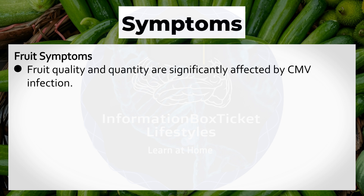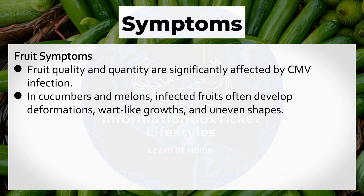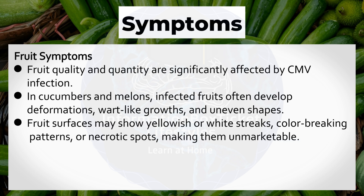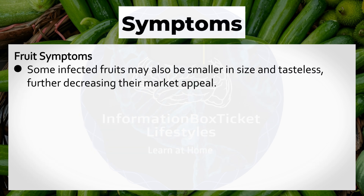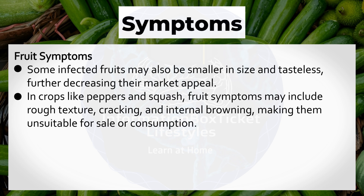Fruit Symptoms: Fruit quality and quantity are significantly affected by CMV infection. In cucumbers and melons, infected fruits often develop deformations, wart-like growths, and uneven shapes. Fruit surfaces may show yellowish or white streaks, color-breaking patterns, or necrotic spots, making them unmarketable. In tomatoes, CMV infection leads to uneven ripening, discoloration, and poor fruit set, reducing the crop's commercial value. Some infected fruits may also be smaller in size and tasteless. In crops like peppers and squash, fruit symptoms may include rough texture, cracking, and internal browning, making them unsuitable for sale or consumption.